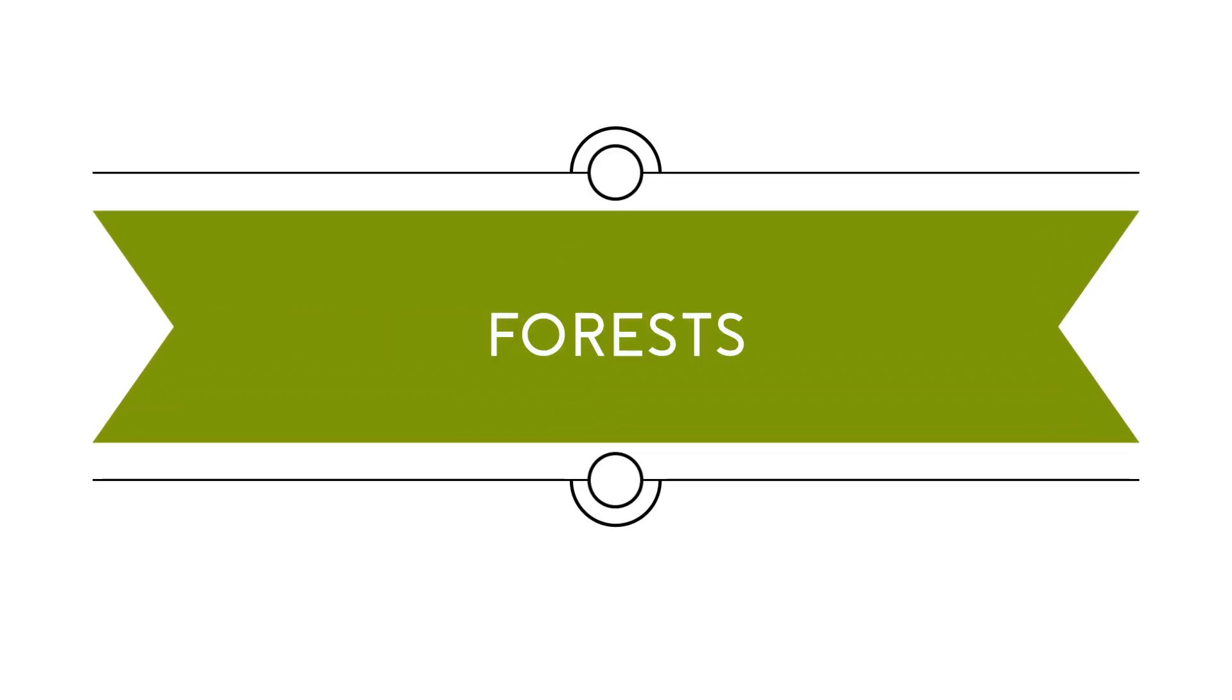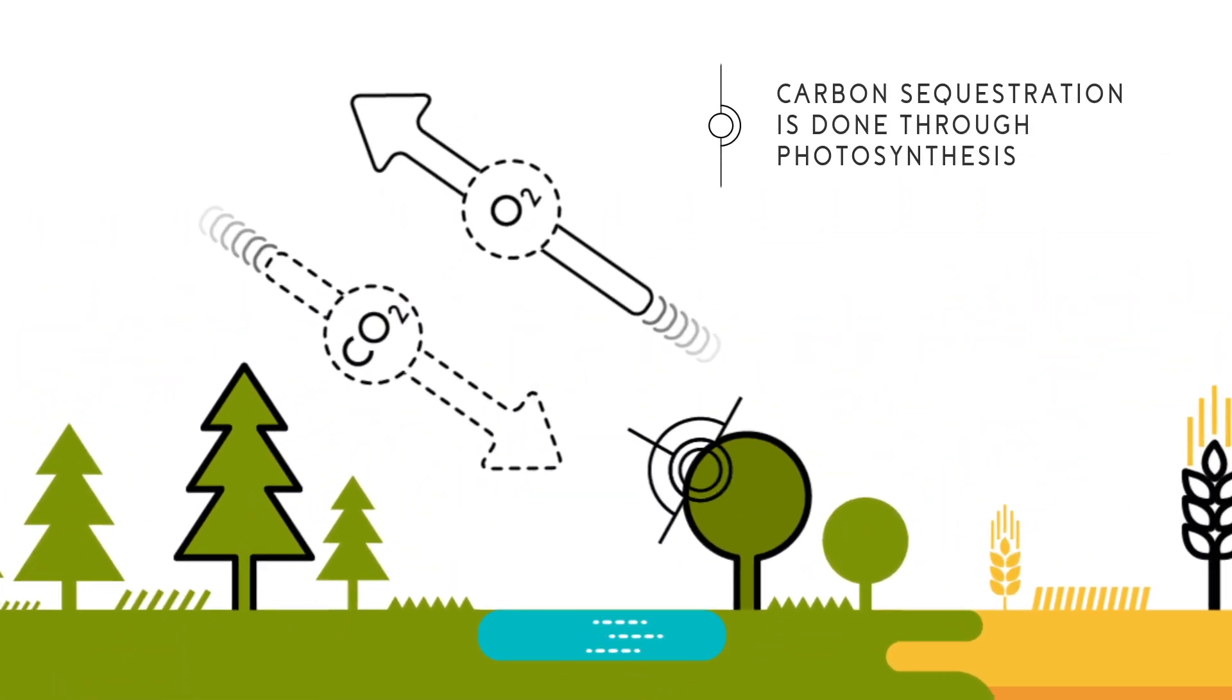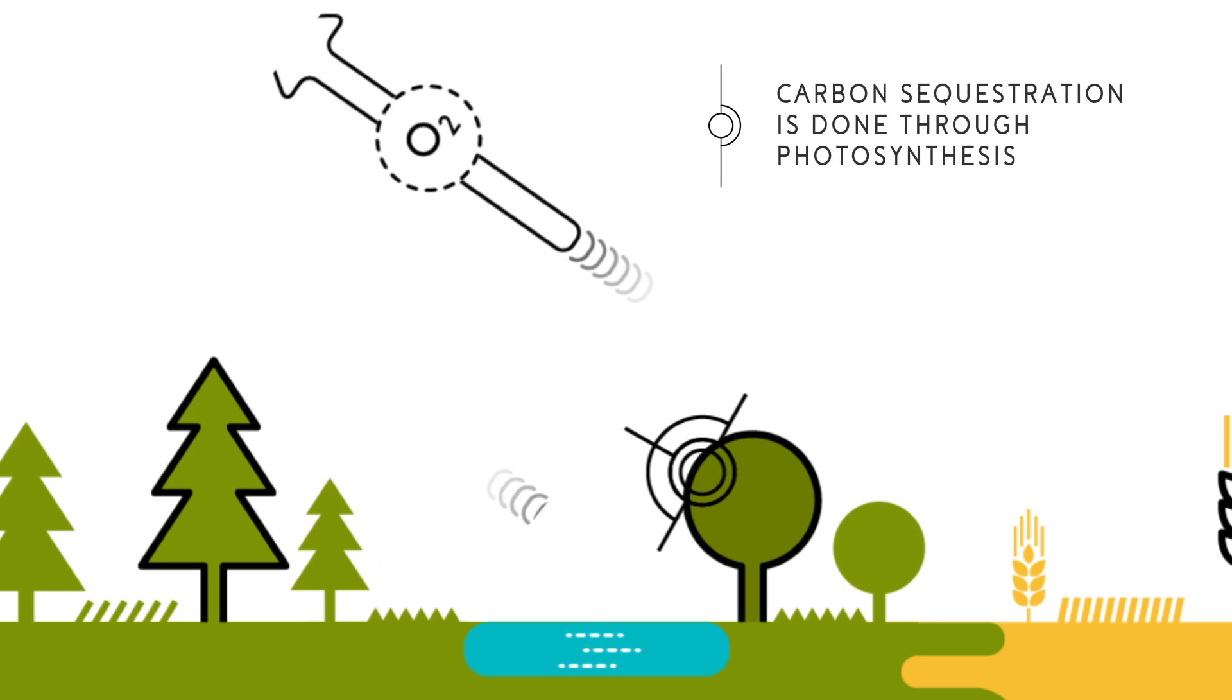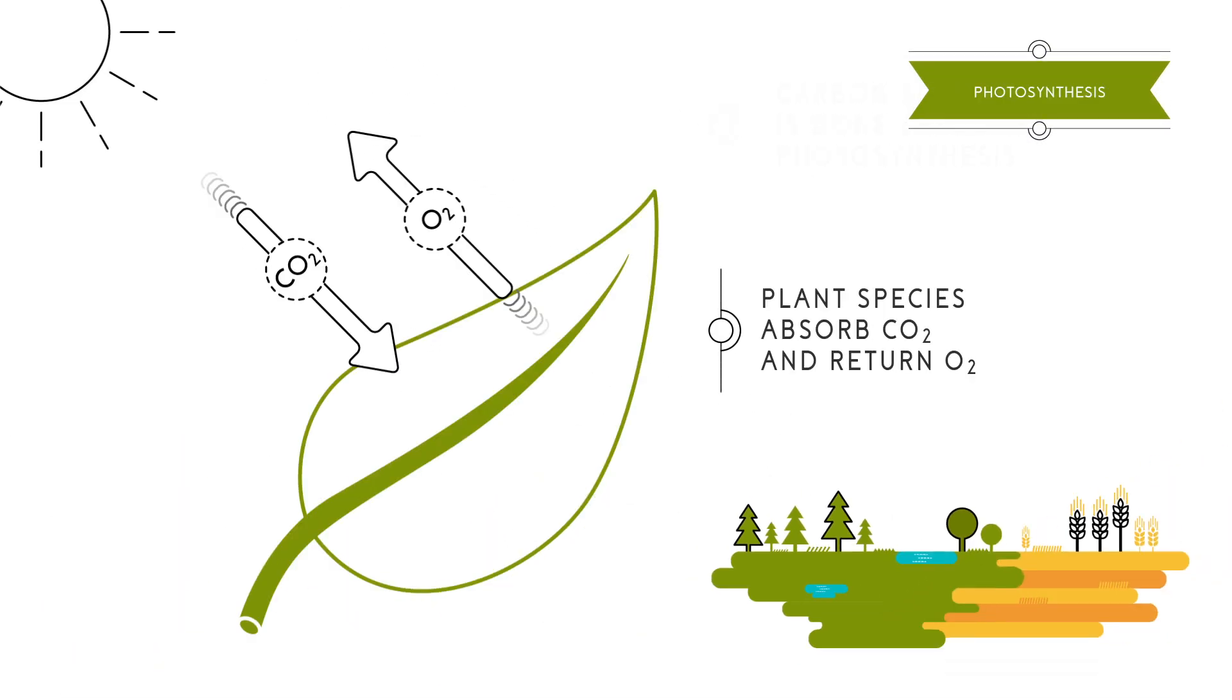In the case of forests and other forest areas, carbon sequestration is done through photosynthesis. Plant species absorb CO2 from the atmosphere, store some content of the carbon and return oxygen to the atmosphere.